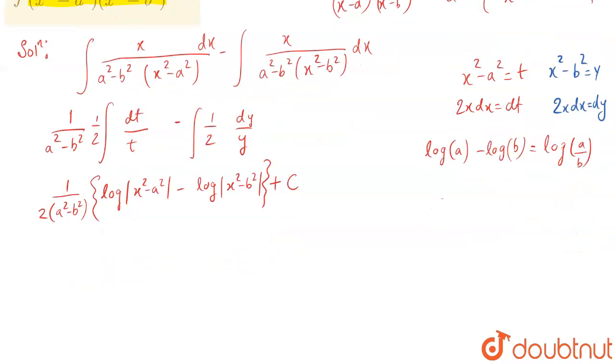So the final answer is 1/[2(a²-b²)] times log|(x²-a²)/(x²-b²)| + C. This is the final answer. Thank you guys.